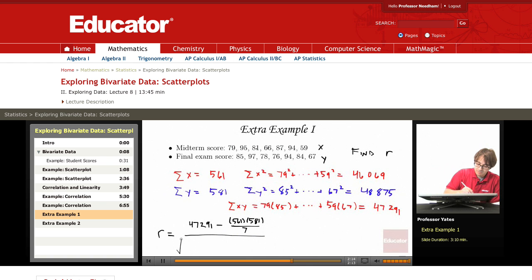In the denominator, I have the square roots of 46,069 minus 561 squared divided by 7, and then we have our 48,875 minus 581 squared divided by 7.